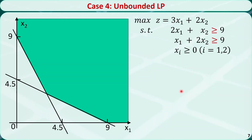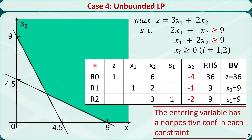This is the case where the linear programming problem is unbounded. The constraints are two greater-than-or-equal-to constraints, and the z value can be infinitely large. When we perform the simplex iteration, at some point the entering variable has a non-positive coefficient in each constraint, so we cannot proceed. This is the indicator that the problem is unbounded.